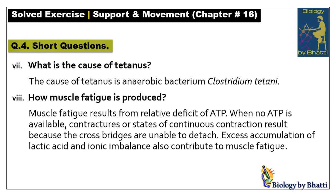The last short question: how is muscle fatigue produced? Muscle fatigue results from a relative deficit of ATP. When no ATP is available, contractures — states of continuous contraction — result, because cross bridges are unable to detach. Excess accumulation of lactic acid and ionic imbalance also contribute to muscle fatigue.